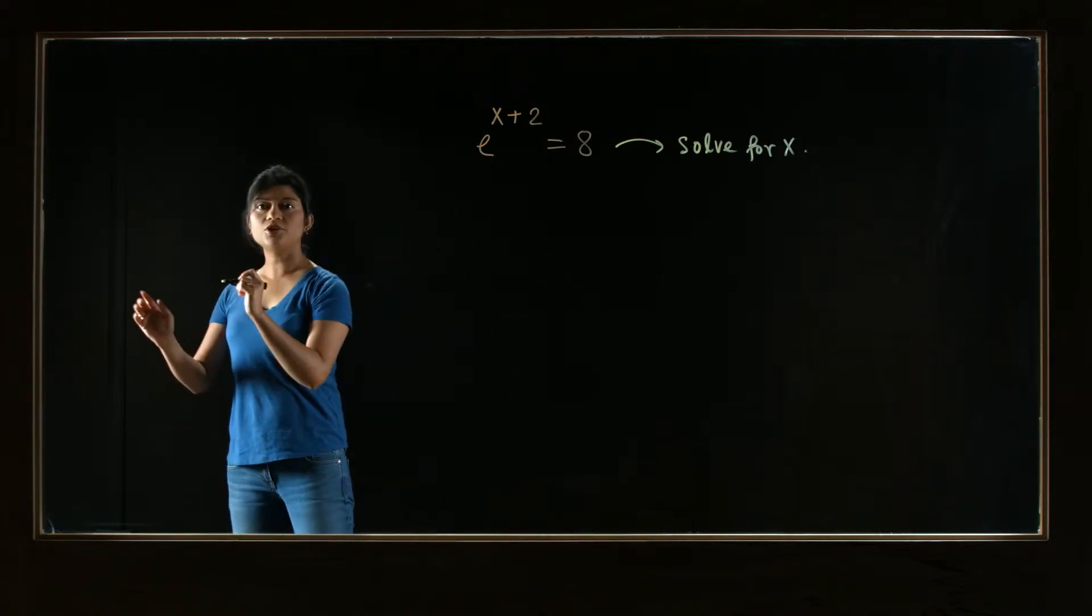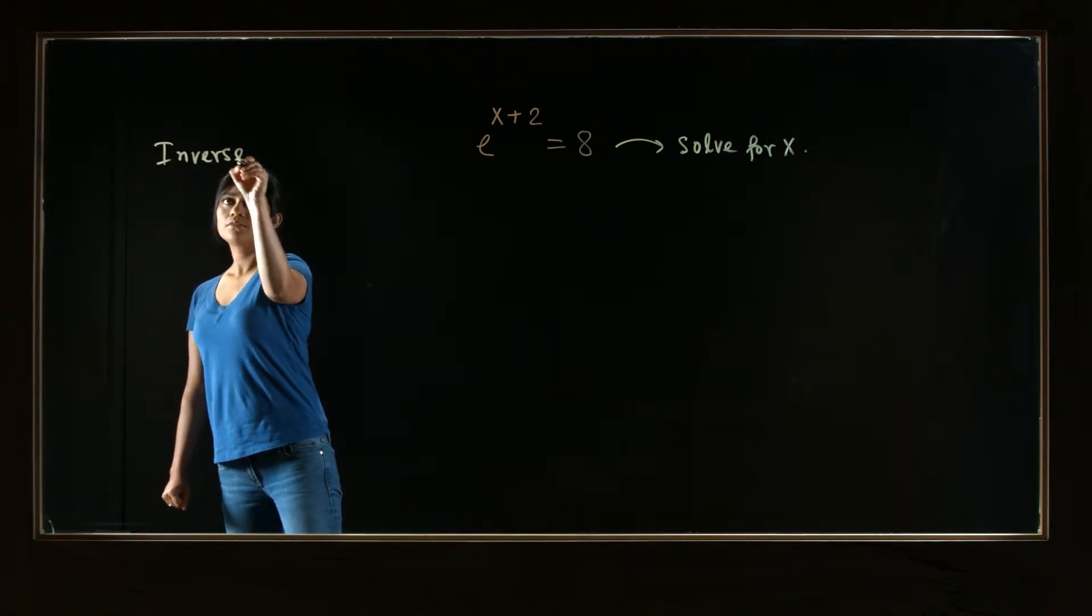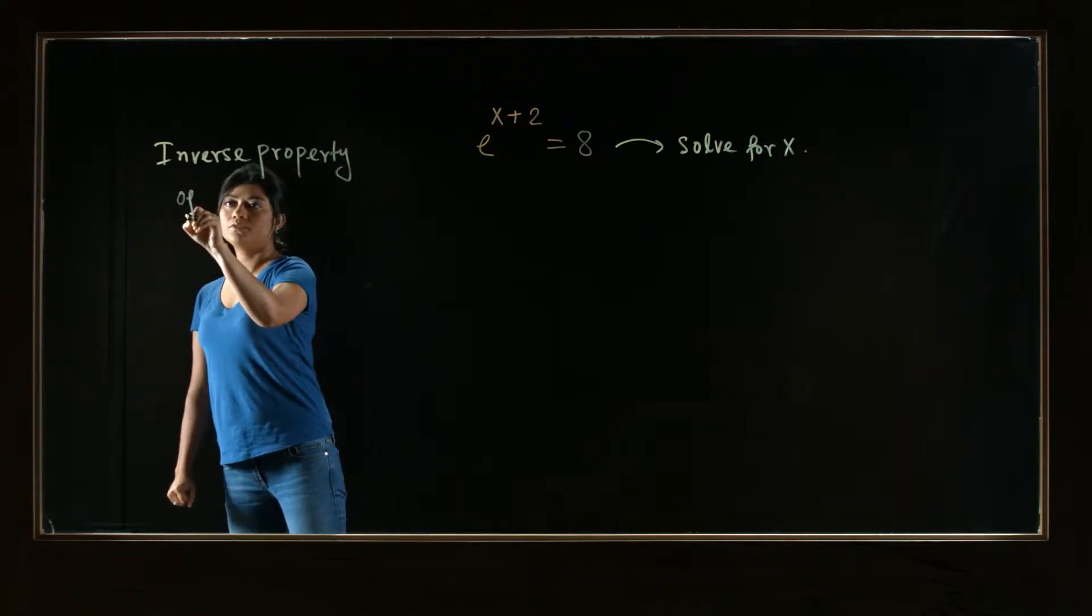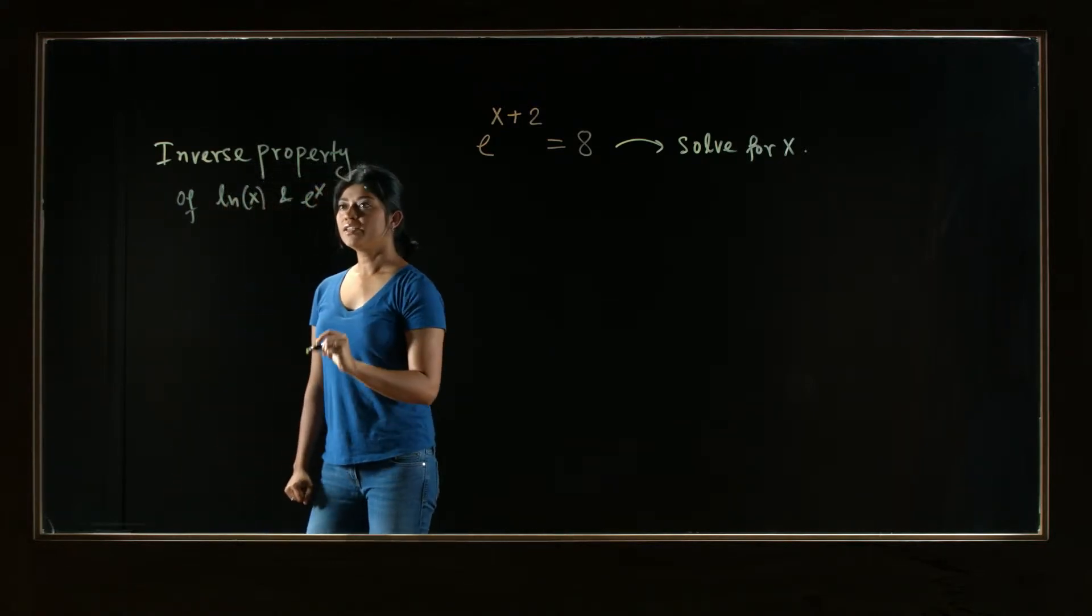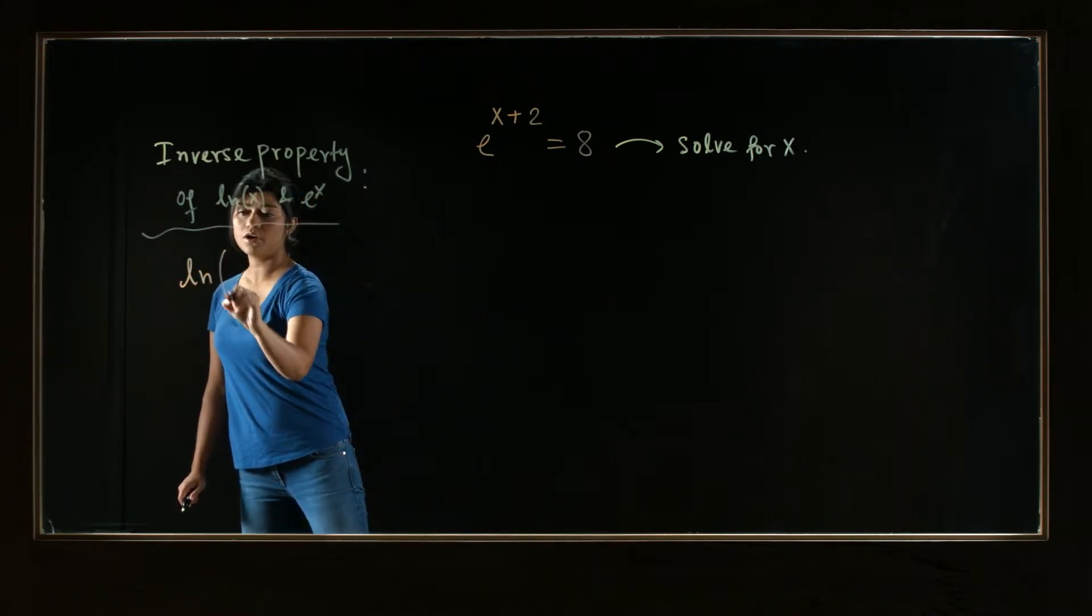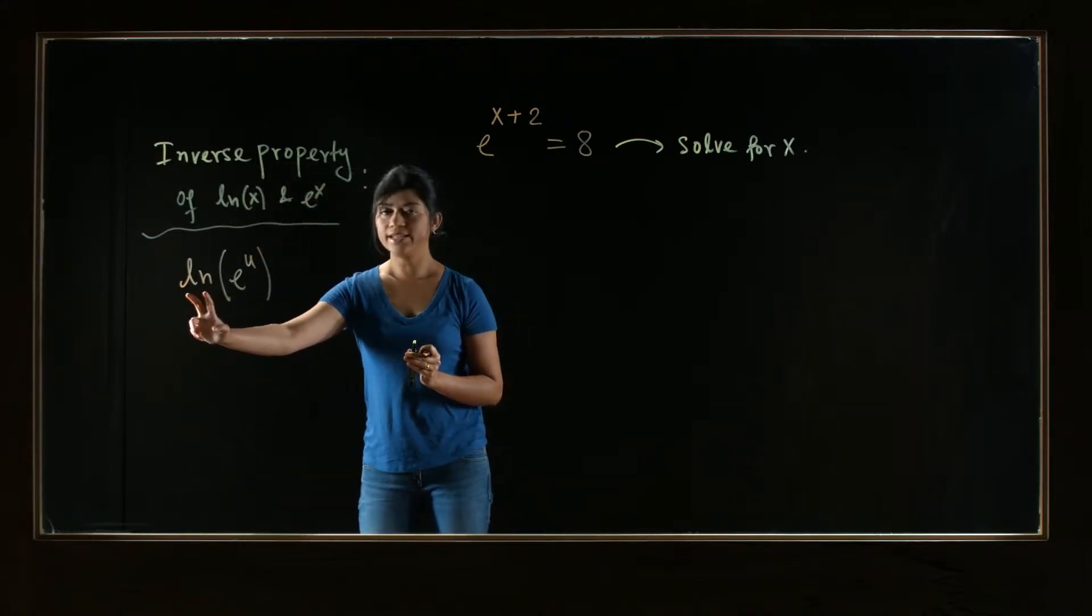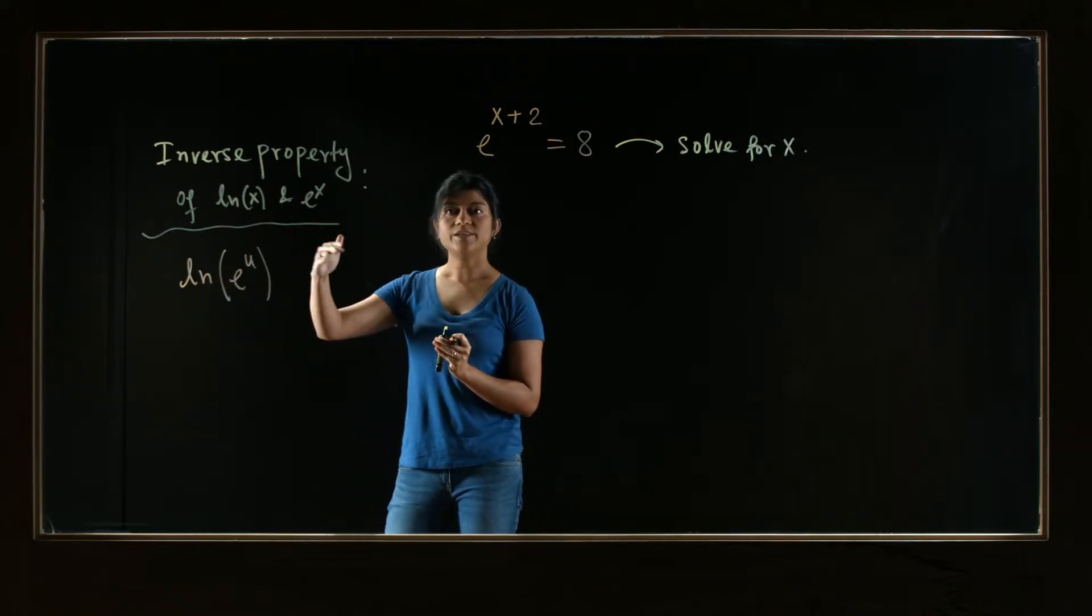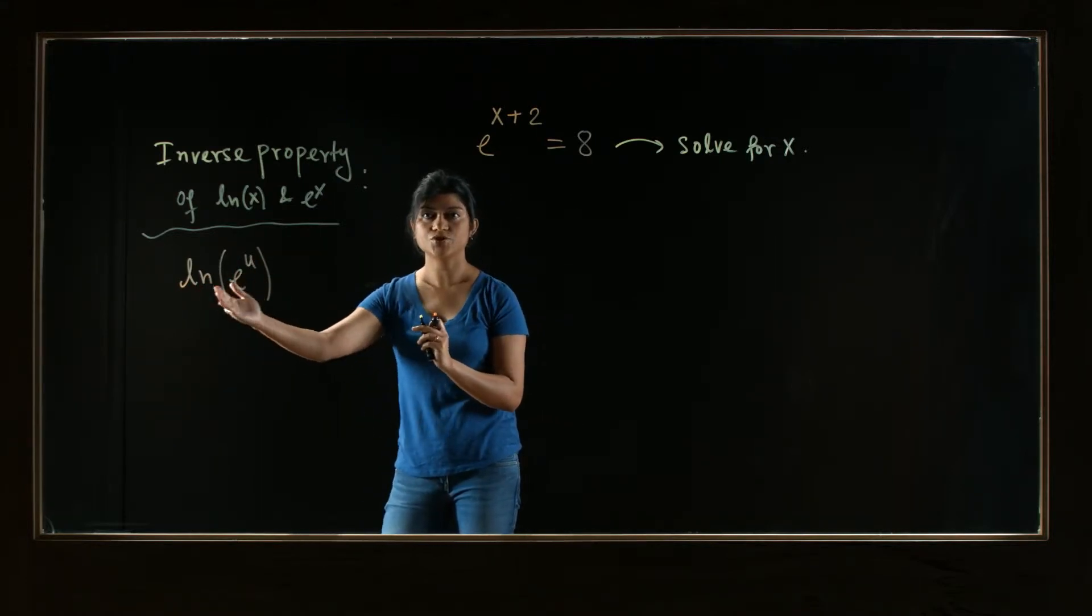So let me first remind you of the inverse properties of natural log and the exponential function. The property says that whenever you have natural log of e to the power u—notice that ln is a function and e is another function, and they're inverse to each other. In mathematical terms, that means that these two functions cancel each other when they're sitting next to each other.